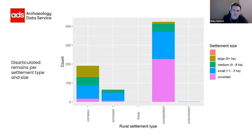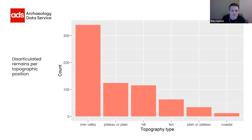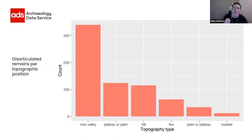Plotting by settlement site and settlement type again shows that the vast majority are unclassified sites of uncertain size — something to look into in more detail. Topography type was also a field in the original database. The vast majority of sites with disarticulated human remains are found in river valleys, which is interesting given the strong tradition, particularly in the late Iron Age, of structured deposition in watery locations or contexts. But we need to delve deeper into the specific positions in river valleys to understand what proximity constitutes a characteristic — an interesting correlation nonetheless.